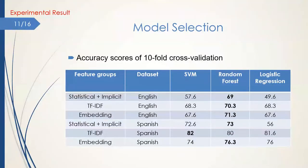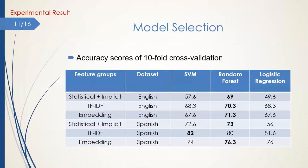We selected the classifier with the best performance among logistic regression, random forest, and support vector machine with linear kernel. Each model is evaluated with the average accuracy of 10-fold cross-validation on the training data. For all types of features except TF-IDF on the Spanish dataset, random forest achieved the best score. SVM with linear kernel obtained the best result on TF-IDF features of the Spanish language. So, for TF-IDF features of Spanish, we used SVM, and for the other groups of features, we used random forest.